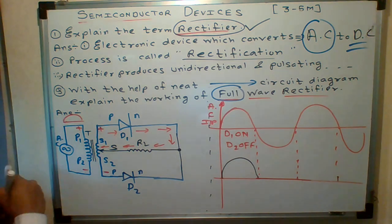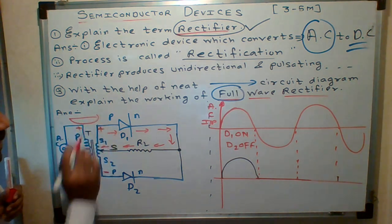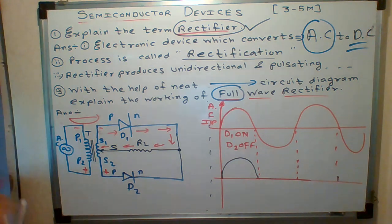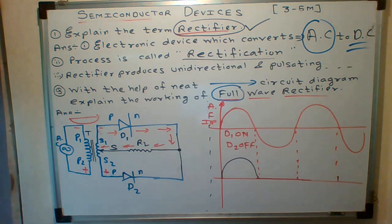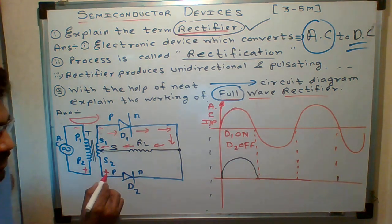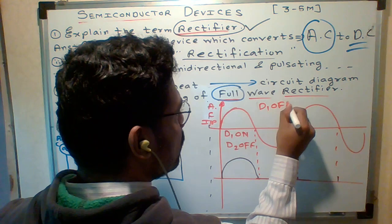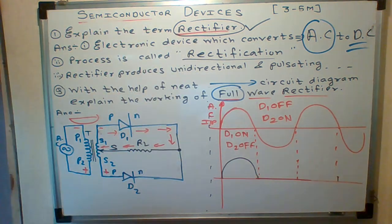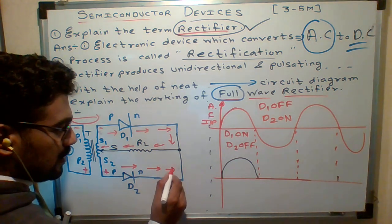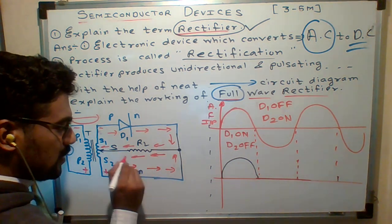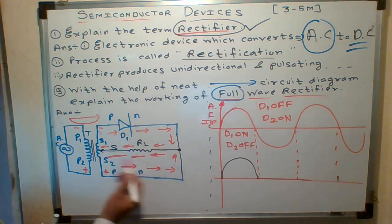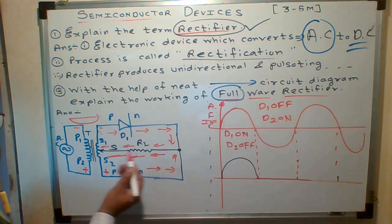During the negative half-cycle, this will be the negative part of the waveform. Here you will get positive at the other end. Whose P-type semiconductor is connected to the positive terminal? It is D2. So diode D2's P is connected to positive — D2 is on, and D1 is off. Current will flow through D2, come to the load, and pass through the resistor. You will find that during the positive half-cycle and during the negative half-cycle, the direction of current through the load is the same.